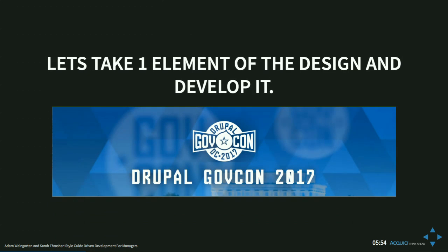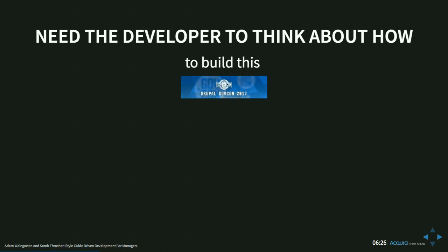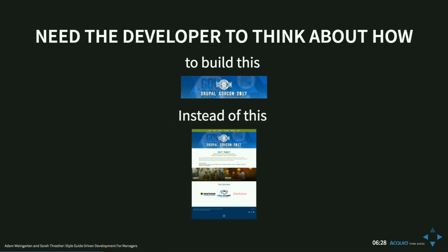As an example of a separate design pattern: this is a masthead element. It has a logo, header text, and a large background image. It's a small piece that can be surrounded by other pieces on actual pages. In this particular instance it may not be reused anywhere, but we're using it as a simple starting point to show how this breakdown works.